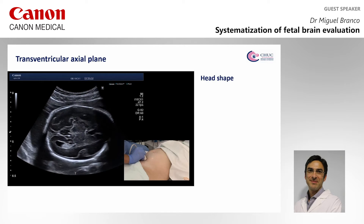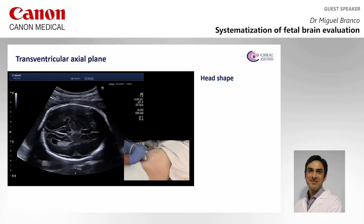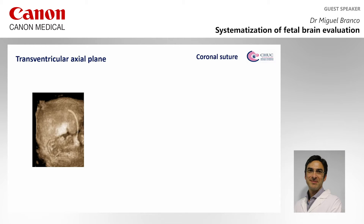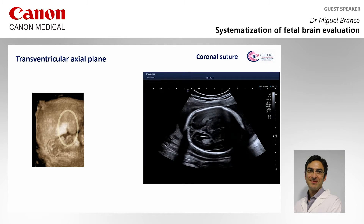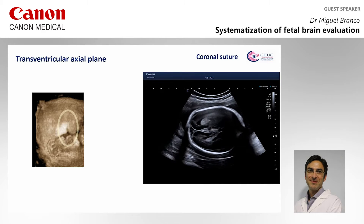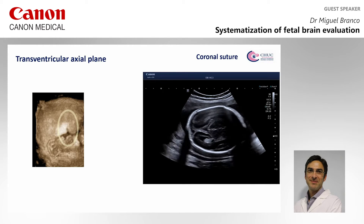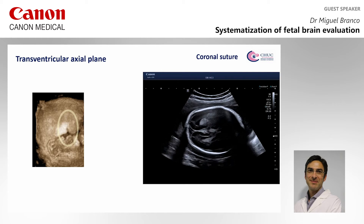In this plane, we evaluate the shape of the head and the continuity of the cranial bones. We also identify the coronal and lambdoid sutures, which are our acoustic windows. If we have premature closure of the sutures, as in this case of craniosynostosis, the corresponding part of the brain will be difficult to evaluate, as we have shadowing by the bone.